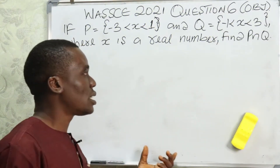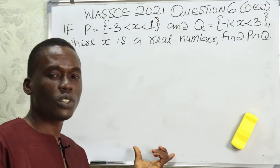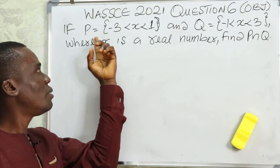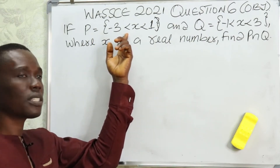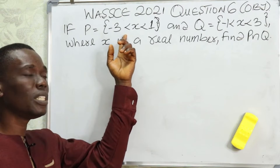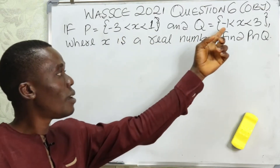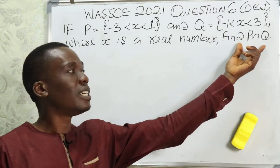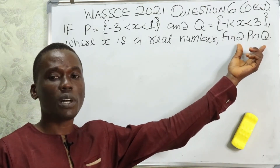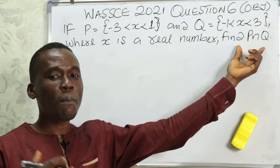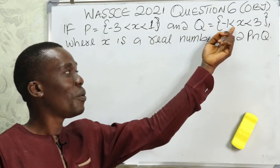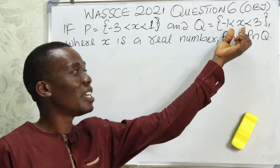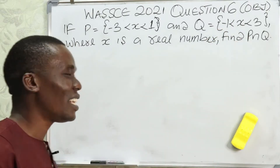Let's get straight down into solving this question. This question is on set theorem and the first thing you need to do is to find the values of x that are within the range for P, and the values of x that are within the range for Q. Then you find the intersection of those values, and finally you put them back into a range format, because your answer options are expressed as an inequality range.